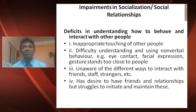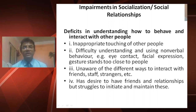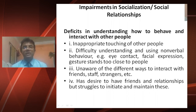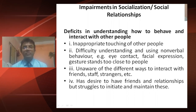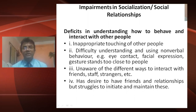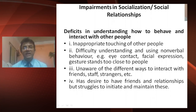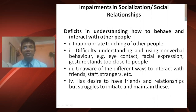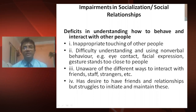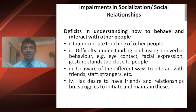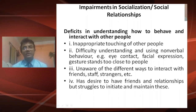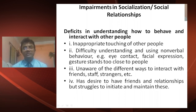Impairment in socialization involves deficits in understanding how to behave and interact with other people. They have inappropriate touching of other people and find difficulty understanding and using nonverbal behavior such as eye contact, facial expressions, and gestures. Sometimes they stand too close to people and are unaware of different ways to interact with friends, staff, and strangers.